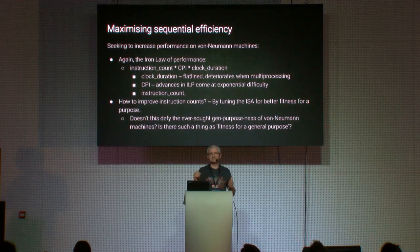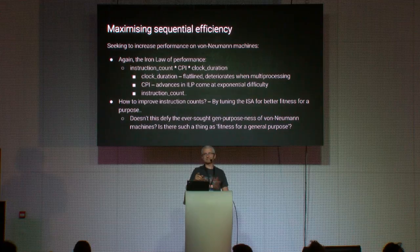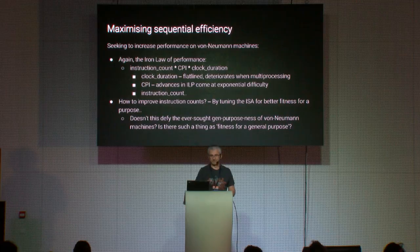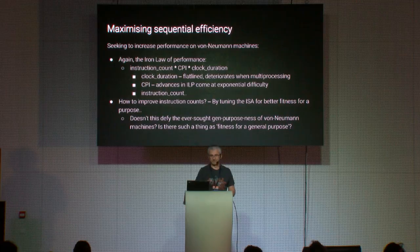Seeking to improve the performance of von Neumann machines — focusing on the Iron Law term by term — the clock duration didn't exactly flatline, but its exponential growth died around 2005. The worst news is that when we do multiprocessing, our instruction clock actually drops, because it takes more energy to run N processors at the same clock than one processor, and that energy must be dissipated. So multiprocessing inevitably brings a drop in clock compared to uniprocessing.